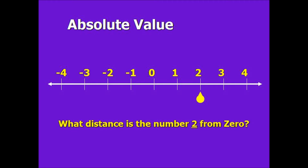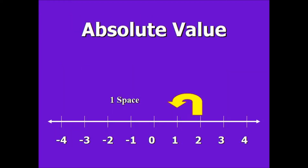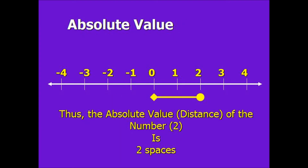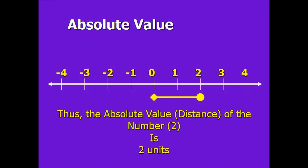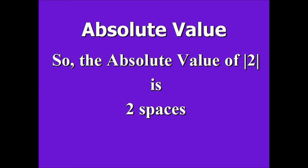Beginning at the number 2, we move one space, two spaces towards zero. Thus, the absolute value — the distance the number is from zero — is two spaces or two units. The absolute value of 2 is two spaces or two units from zero.